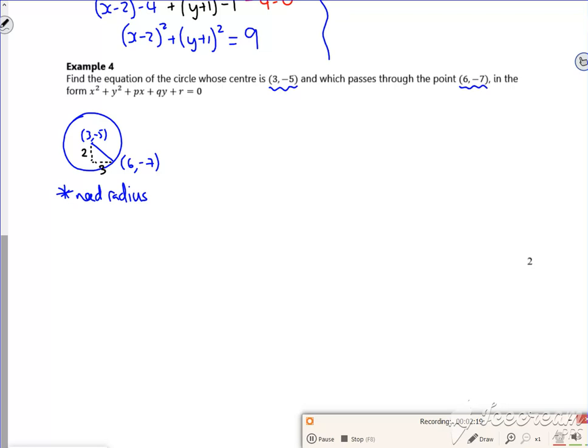So the radius will be 2 squared plus 3 squared, so the radius is root 13. So when I sub it in, because I want r squared to sub in, I'm going to put 13 into my equation.